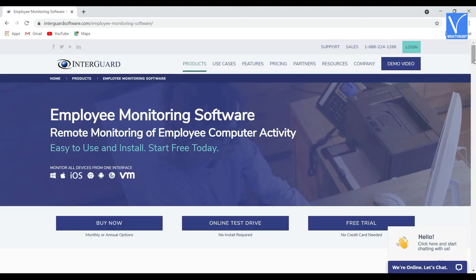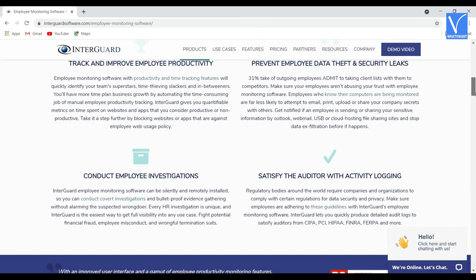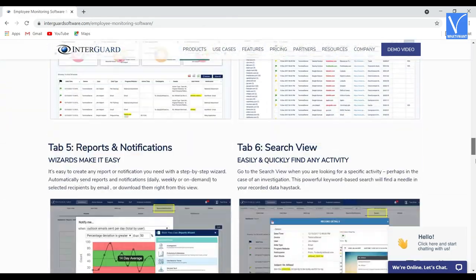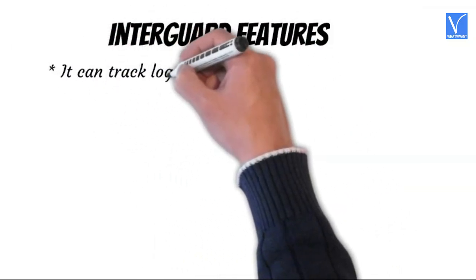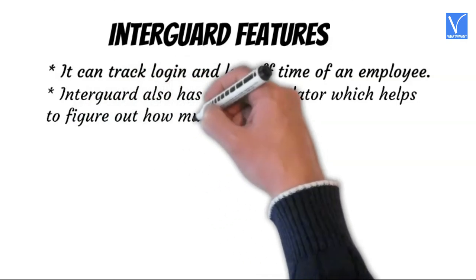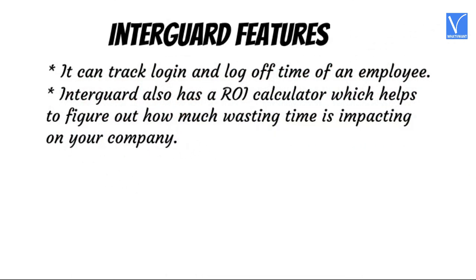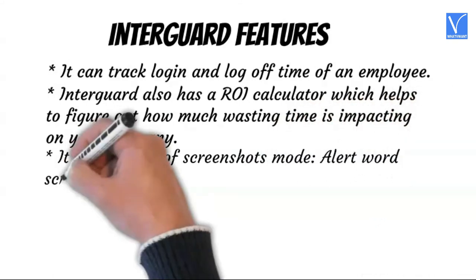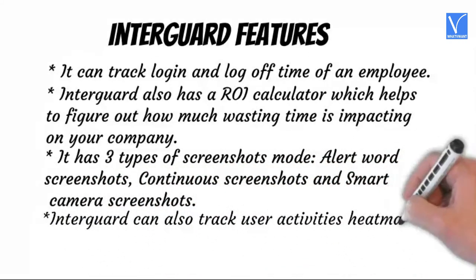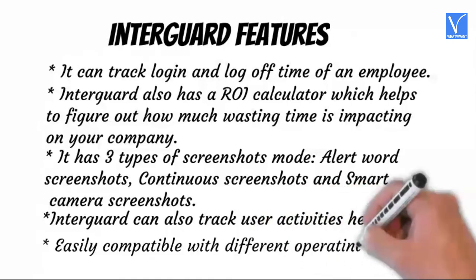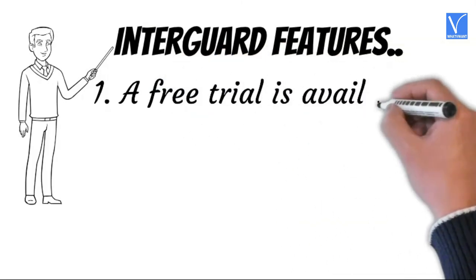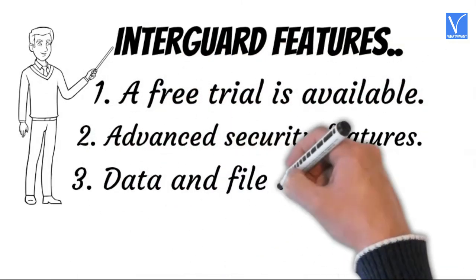Number eight: InterGuard. InterGuard is the most secured employee time tracking app. It has multiple types of modules, each with tons of sub-features responsible for tracking and monitoring activities. InterGuard features: it can track login and log-off time of an employee. InterGuard also has an ROI calculator which helps figure out how much wasted time is impacting your company. It has three types of screenshot modes: alert word screenshots, continuous screenshots, and smart camera screenshots. InterGuard can also track user activity heatmaps and is easily compatible with different operating systems. InterGuard strengths: a free trial is available, advanced security features, and data and file tracking.